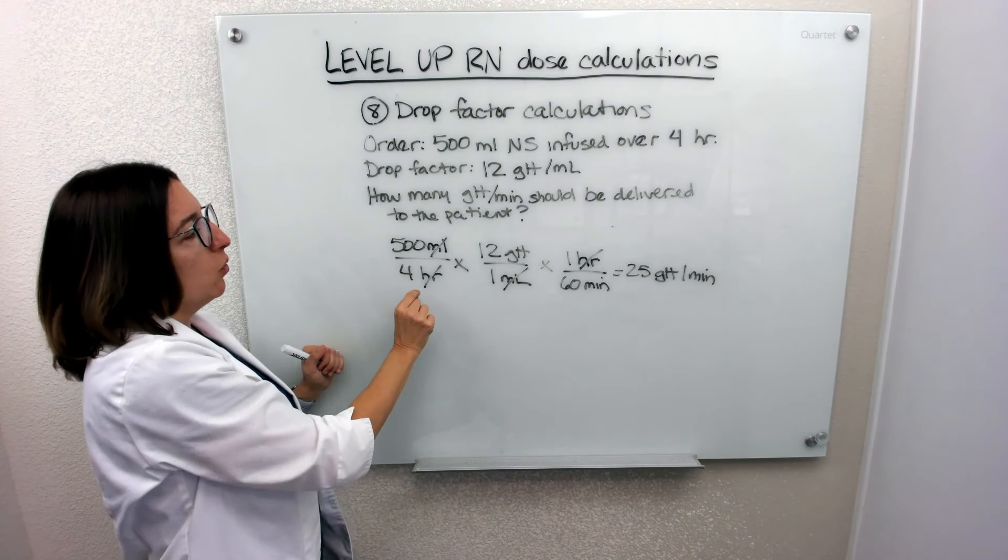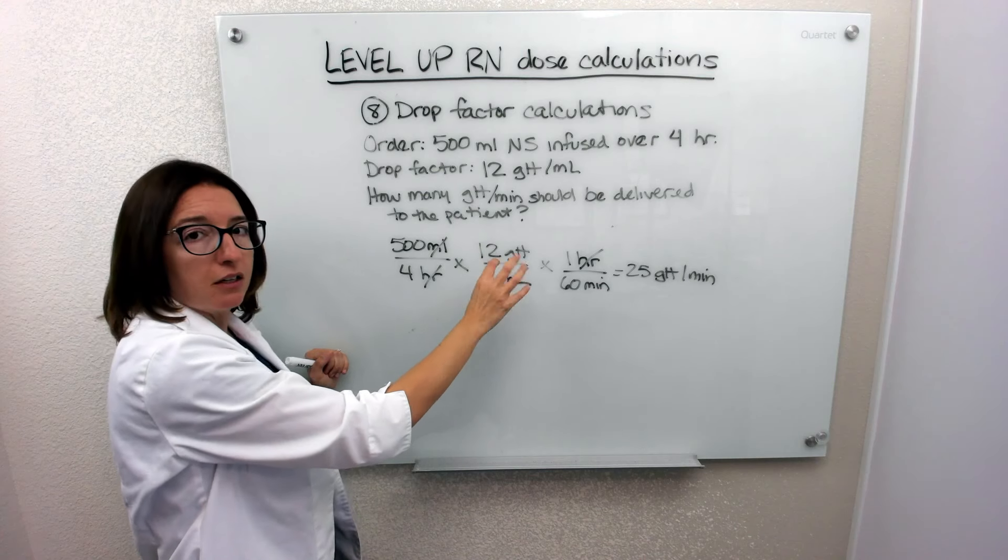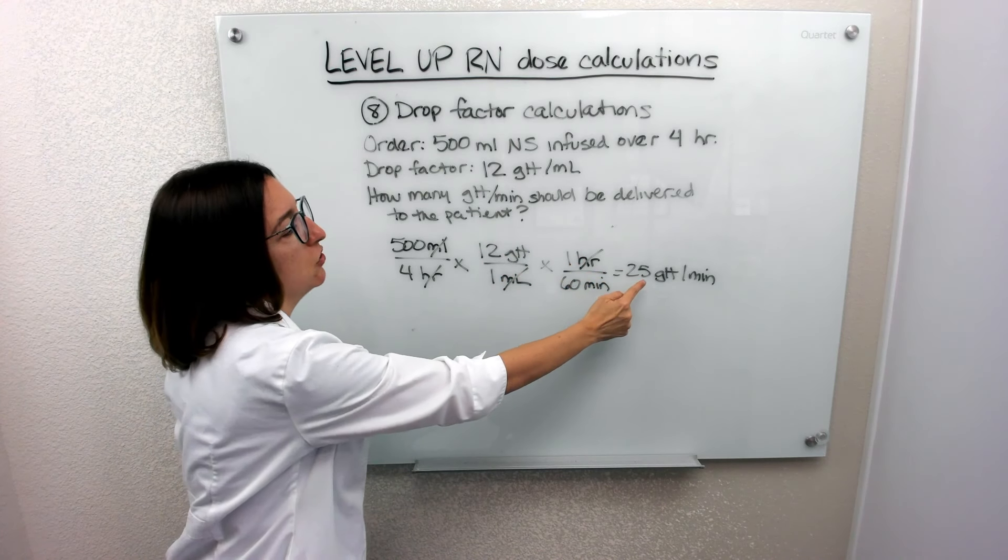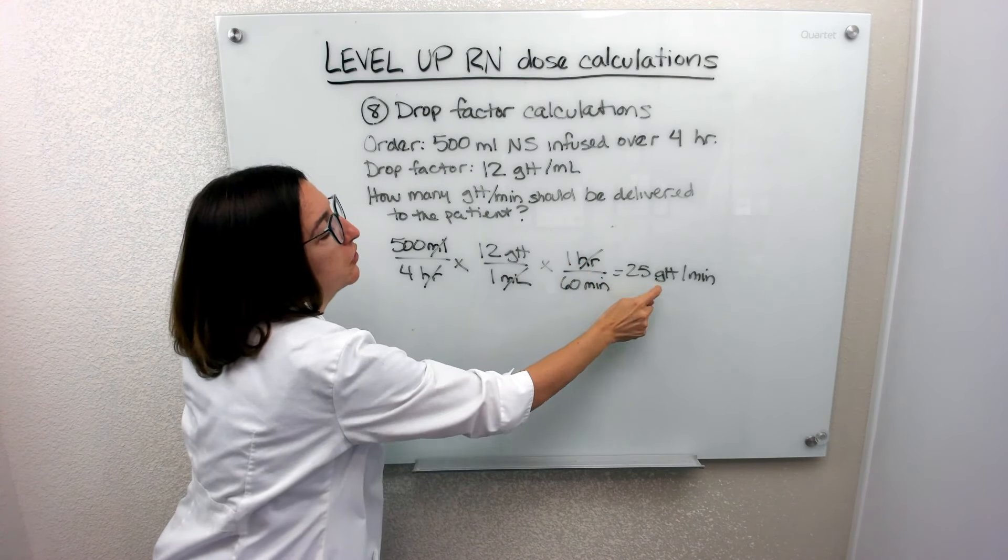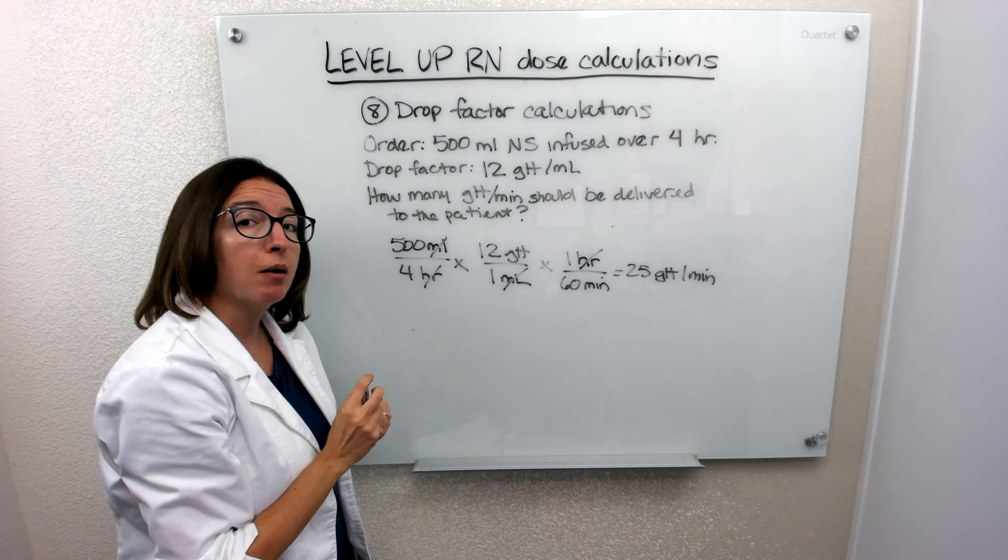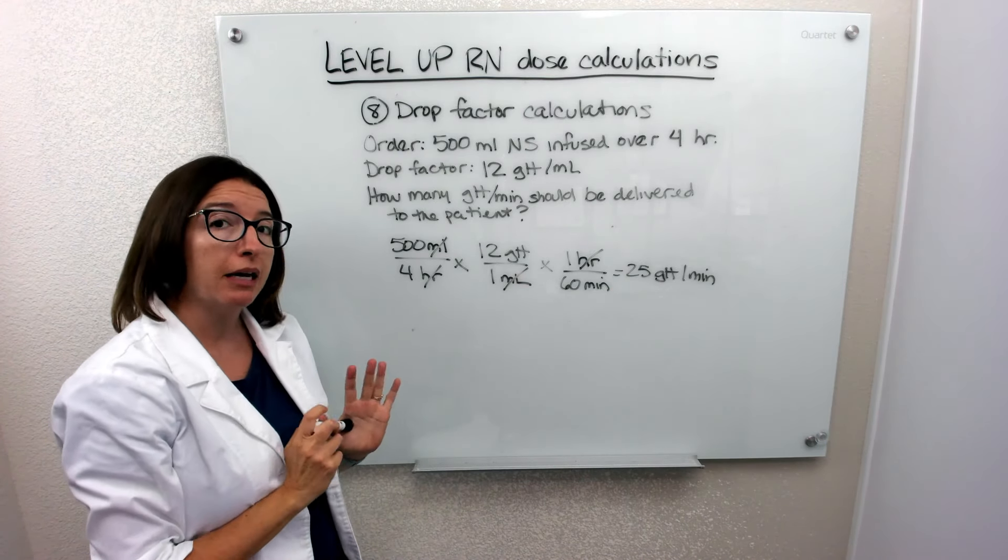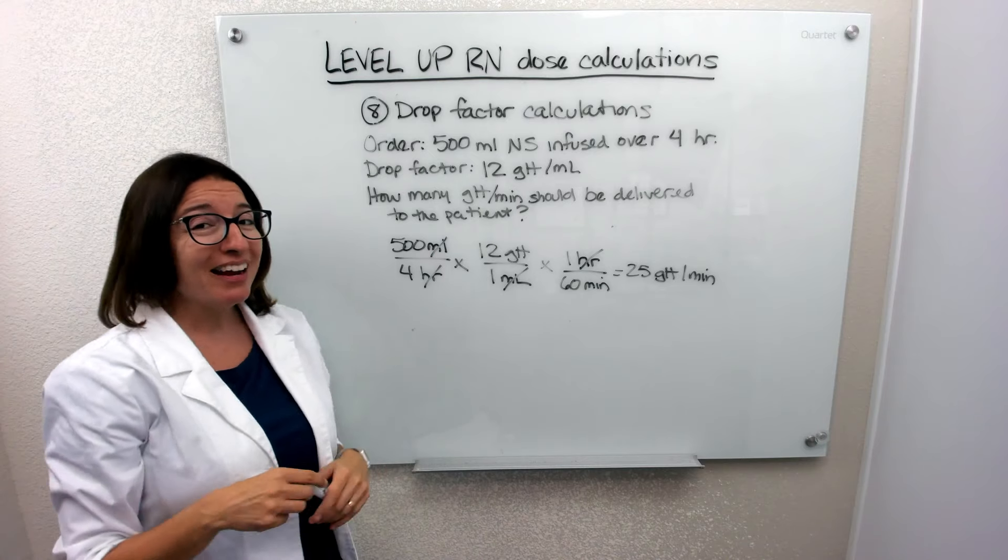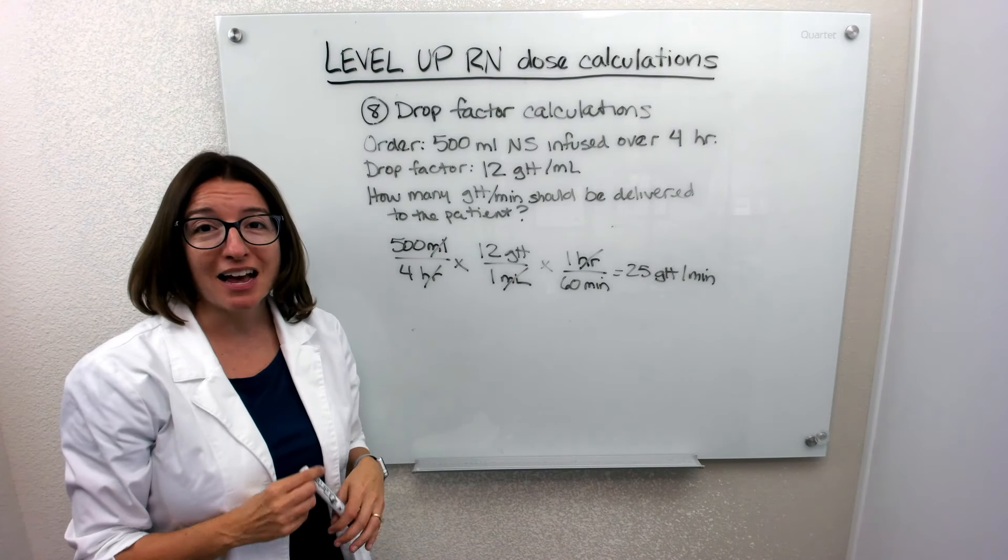So again, we're taking the order. And we're just using converting factors to get to the unit of measure that is requested in the problem. In this case, drops per minute. So that's number eight. Hopefully, that was helpful. And we've got one more, number nine, next.